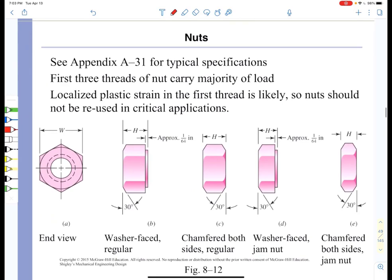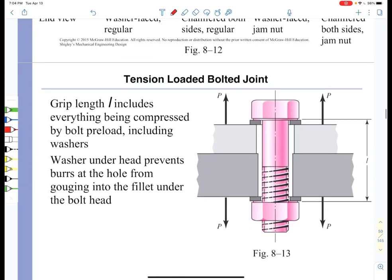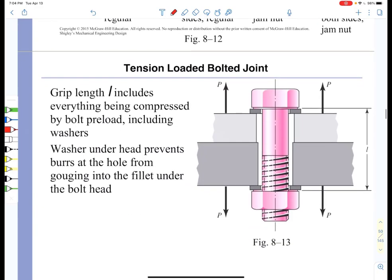The nuts that fit on the bottom of the bolts are described in appendix A31 in the back of the Shigley textbook. We already discussed when we mentioned power screws that the first three threads carry the majority of the load and it is often the case that local plastic deformation occurs in the first thread. This is an important point: nuts should not be reused in critical applications.